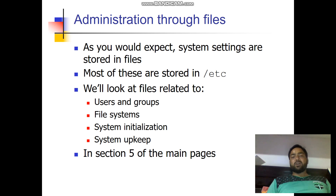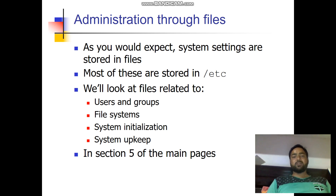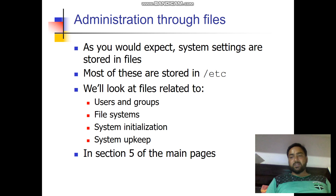We will look at files related to users and groups — whatever users are available in the system and the groups to which users are connected. Then file systems — what different file systems are used in the system. Then system initialization, meaning how we start the system when beginning work. And system upkeep — keeping the system running in executing mode so it properly functions for all tasks.